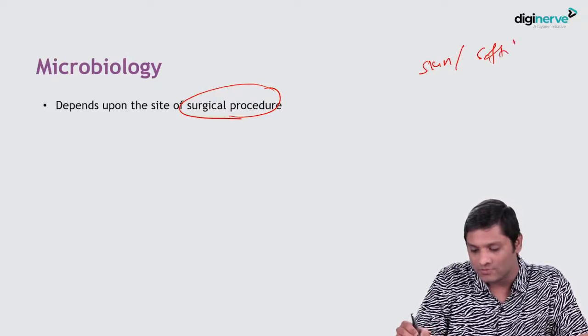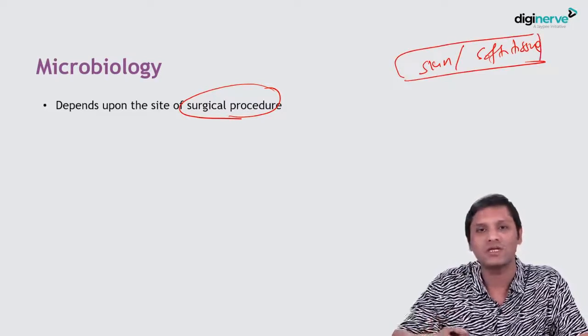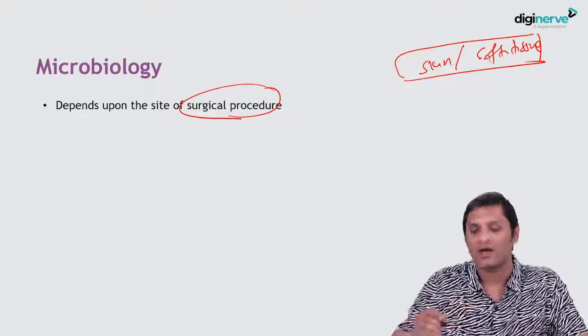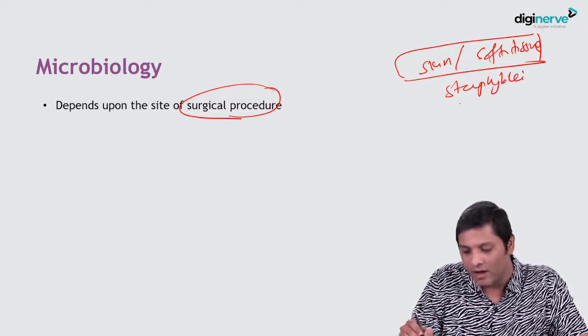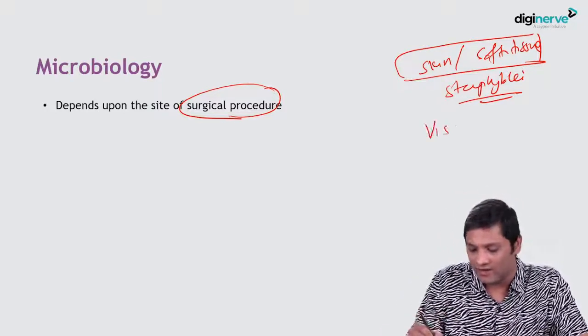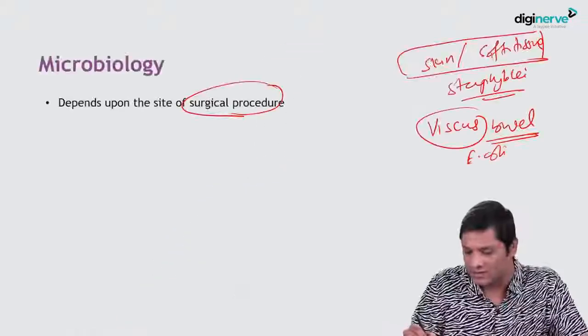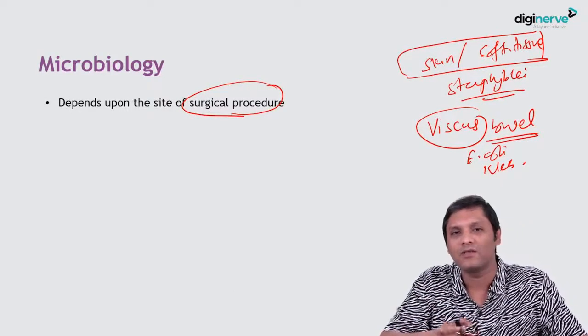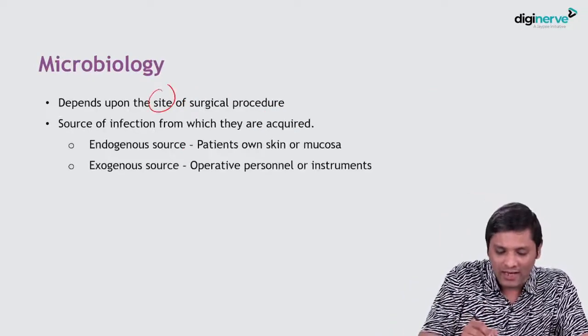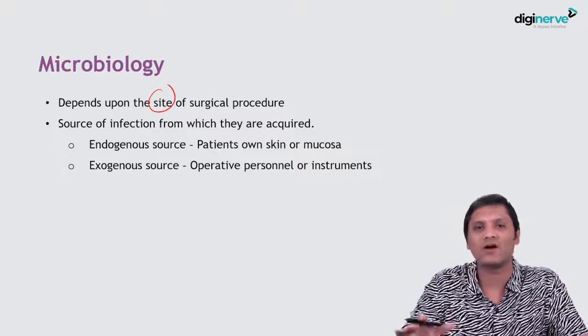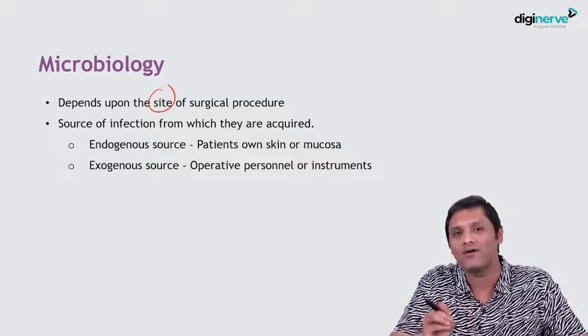The microbiology of SSI — the etiological agents implicated in the pathogenesis of SSI — depends upon the surgical procedure. If the surgical procedure involves skin and soft tissue, common skin organisms such as staphylococci are the most common agents. If it involves viscera like the GI bowel, intestinal commensals such as E. coli and Klebsiella may be the important agents. It depends on whether the surgery is superficial or deep and which organs are involved.